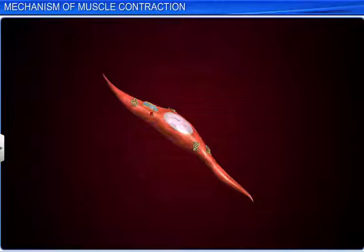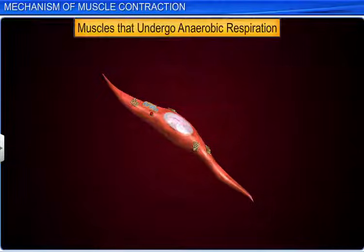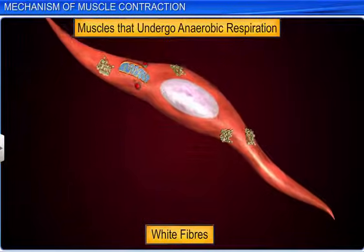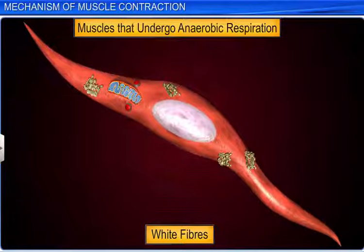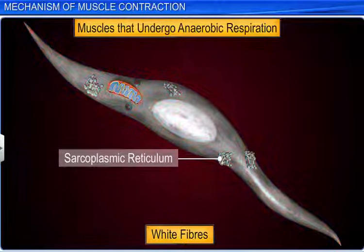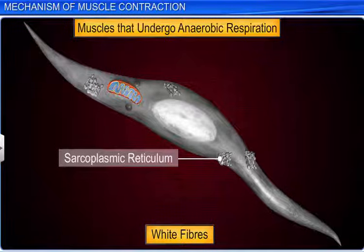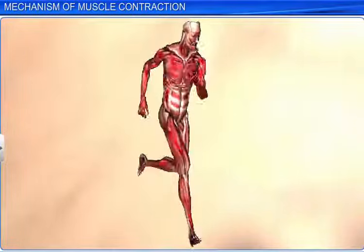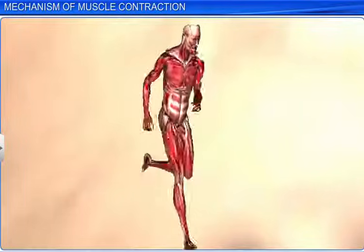On the other hand, muscles that show anaerobic activity are called white fibers. They are thus named because they have very little myoglobin. They are high on sarcoplasmic reticulum but possess few mitochondria. Consequently, they use anaerobic energy processes. All muscles, however, irrespective of showing aerobic or anaerobic activity, contract via the sliding filament mechanism.